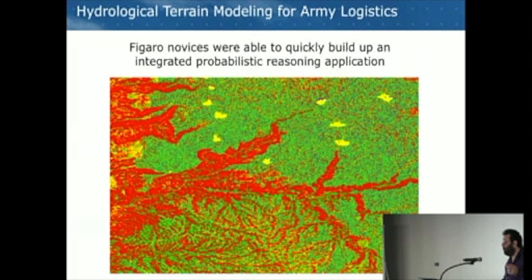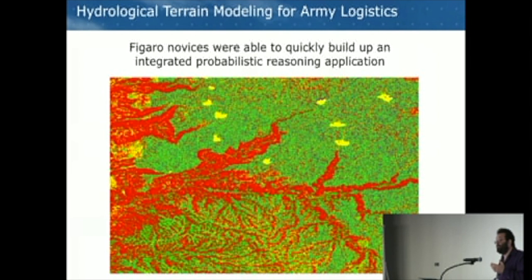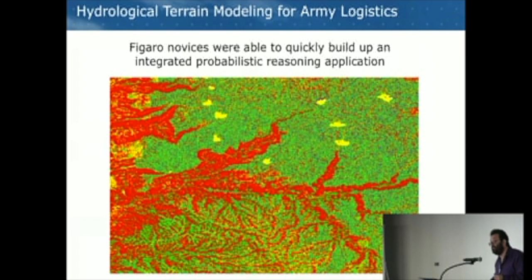The first example is an application where we built hydrological terrain models for army logistics. The problem was to figure out which locations in a region would be suitable for placement of fuel tanks, fuel pipelines, or water tanks, considering things like rainfall, water runoff, and terrain conditions. Figaro novices who had never worked with Figaro before were able to quickly build a machine learning application integrated with a geographic display, showing in red the locations found inappropriate and in green the locations found appropriate.